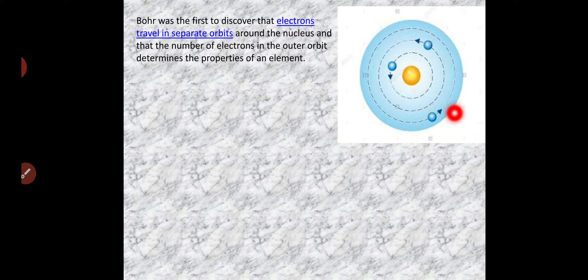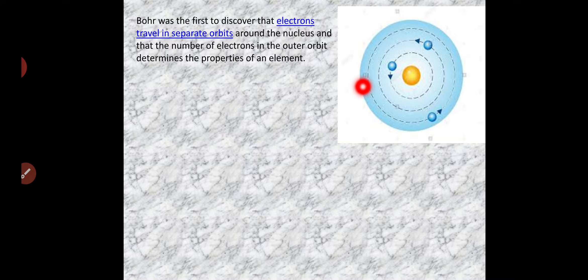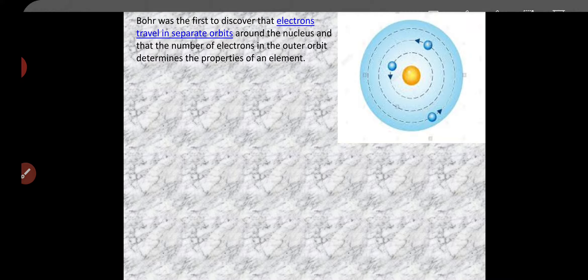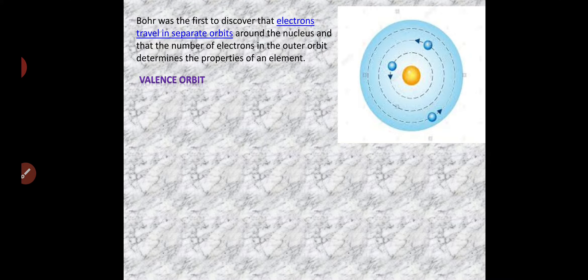The last orbit is very important. Why? Because the last orbit contains electrons that are able to share, take in, or gain from other elements. That is why this last orbit is very important and a special name is given to it — it is called the valence orbit.